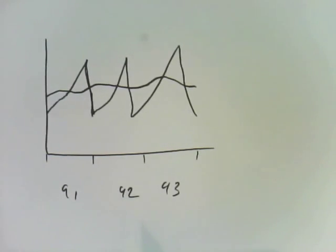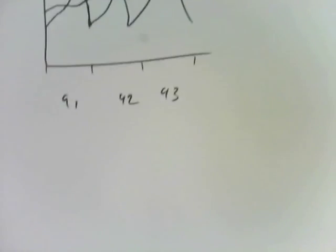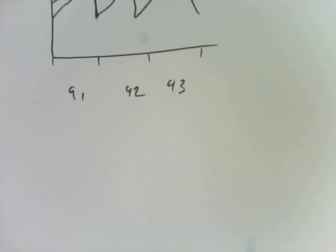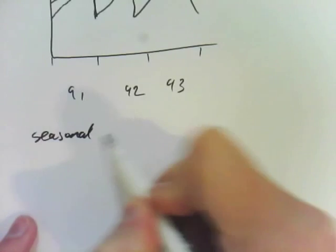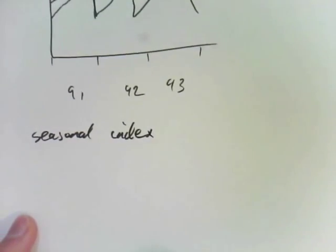There are a couple of things you need to know how to do. One is if you have the seasonal index, you need to be able to go from that to the de-seasonalized value and also to be able to get back to the actual figure. So there are a couple of formulas you need.